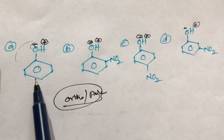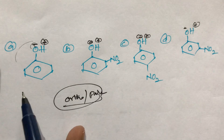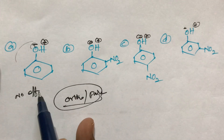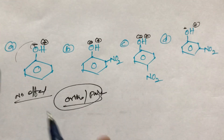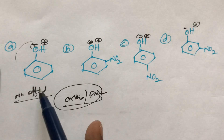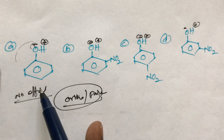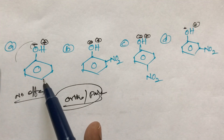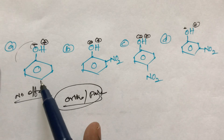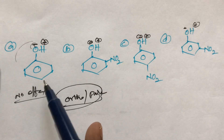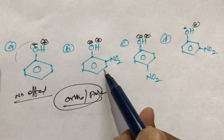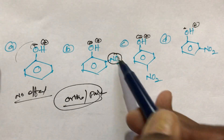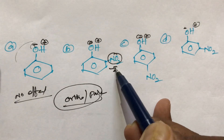In the first compound, phenol, there is no effect — no +I group and no -I effect. No other substituents are present, so there is no +I effect or -I effect. But in the second compound (b), the NO₂ group is present, and this NO₂ group belongs to the -I effect.